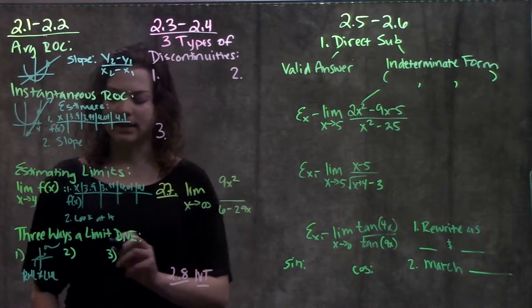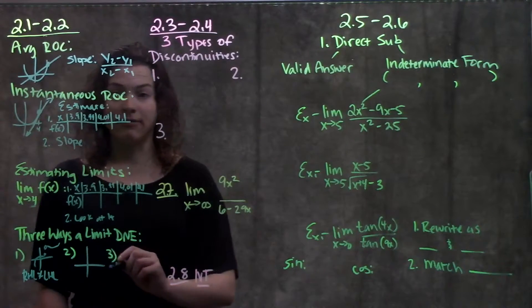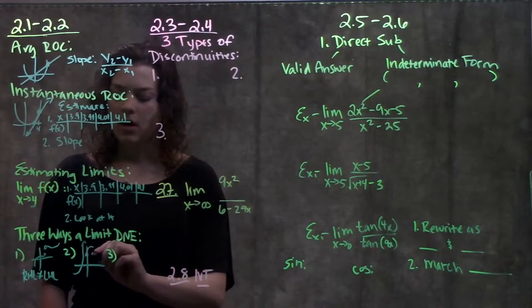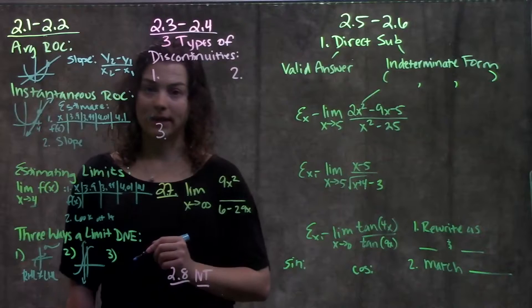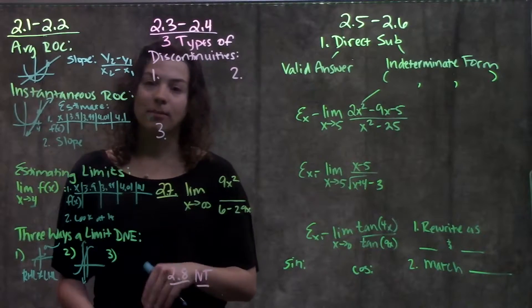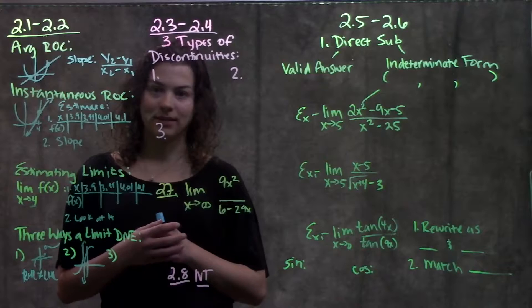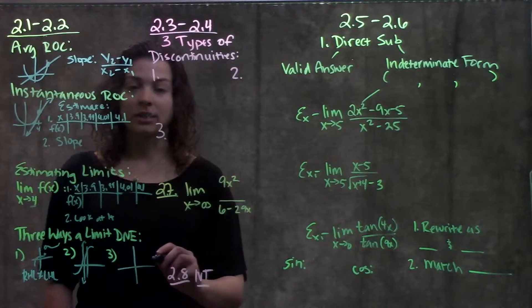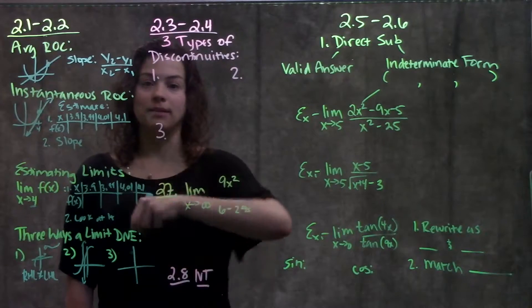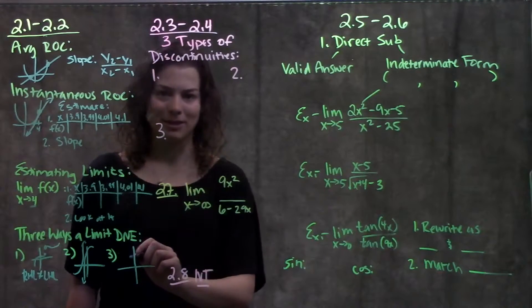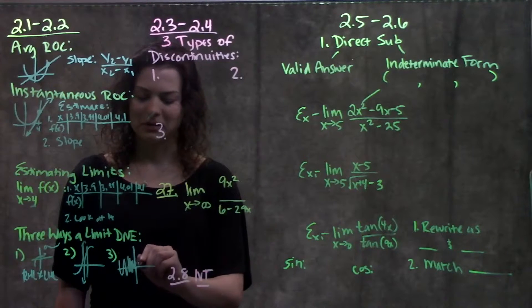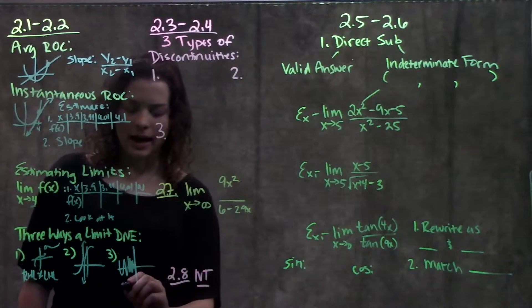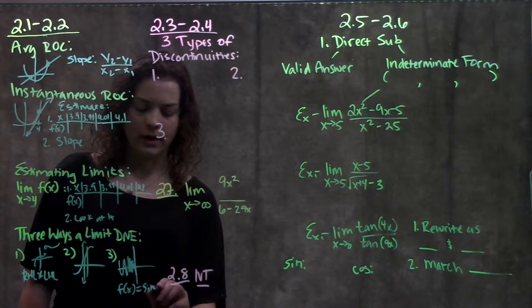A second way a limit doesn't exist is if it's approaching infinity. What that looks like is it's either going all the way up to positive infinity or it's going down to negative infinity. Either way, it's not approaching an actual value, so we say the limit does not exist. The third way a limit doesn't exist is if the function is oscillating, meaning if it's going up and down super quick. I'm going to attempt to draw this - it looks something like that. An example of a function that oscillates is the function sine of pi over x.